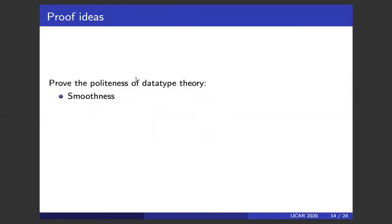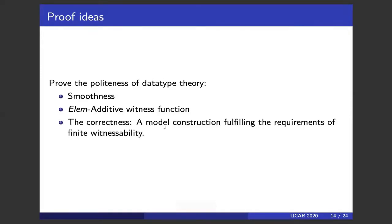Now let's prove politeness of the data type theory. We need two directions. First, smoothness: this is trivial because in the data type theory, when we say politeness with respect to element sorts, the element sorts are uninterpreted, so we can interpret them with arbitrarily large cardinality. Thus the data type theory is smooth. The hard part is the second direction — the witness function. We provide a witness function and prove it is element-additive. Then we only need to prove our witness function is finitely witnessable, via a model construction.